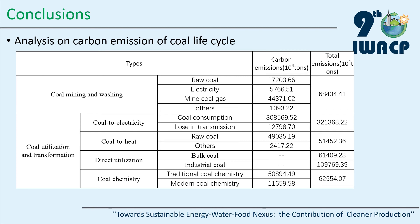In coal utilization and transformation, local consumption is the main source of carbon emissions from coal to heat. The carbon emissions of coal chemistry account for a small share compared to coal to electricity, and traditional coal chemistry emits more carbon dioxide than modern coal chemistry.